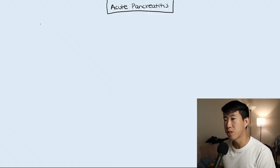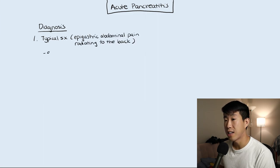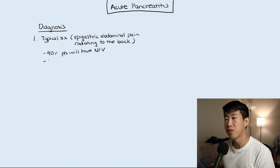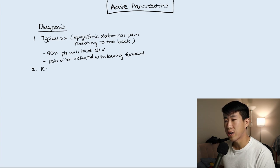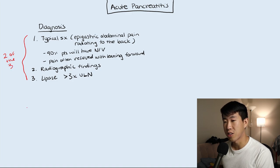In terms of pancreatitis, the first thing we want to talk about is how to make the diagnosis, and this is based off three criteria. Number one is typical symptoms: acute epigastric pain radiating to the back. Over 90% of patients will have associated nausea and vomiting, and sometimes the pain is relieved by sitting up or leaning forward. Number two is radiographic findings — CT or ultrasound. Number three is amylase or lipase greater than three times the upper limit of normal. You need at least two of the three criteria to formally make the diagnosis.